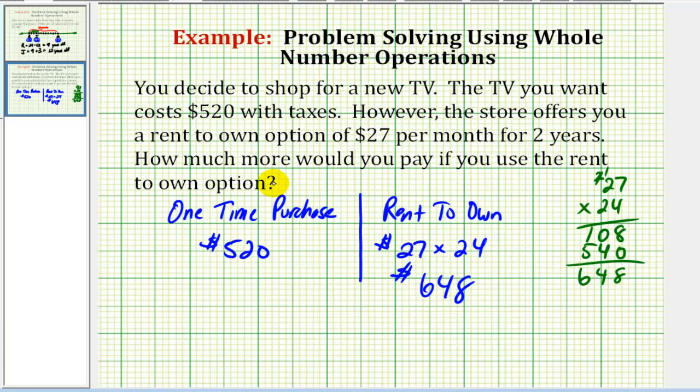So if we want to know how much more this option would cost, we need to find the difference between the one time purchase cost and the rent to own cost. So we'd have 648 minus 520. So eight minus zero is eight, four minus two is two, six minus five is one. So the rent to own option will cost $128 more than the one time purchase cost.